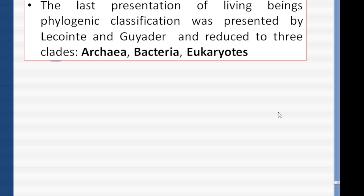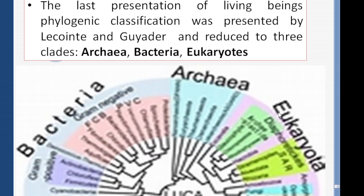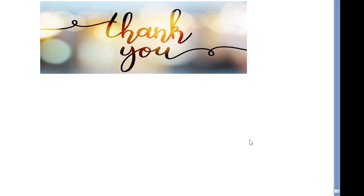To summarize the difference: in the classical classification, the natural world is divided into six kingdoms. In the phylogenetic classification, the natural world is divided into only three clades: the clade of Bacteria, the clade of Archaea, and the clade of Eukaryota. The cladogram starts from an ancestor and branches out to represent the classification.